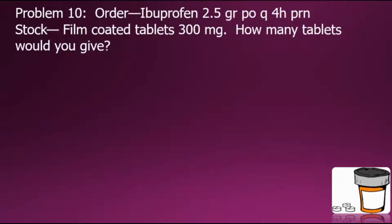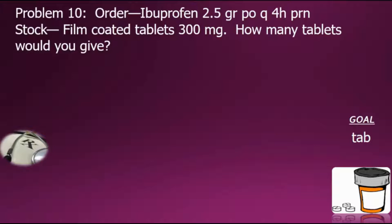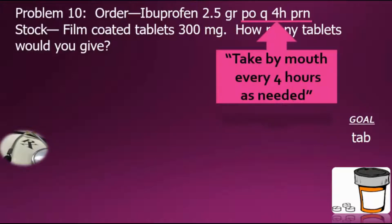In this problem we're given an order of ibuprofen 2.5 grains PO Q4 hours PRN. In stock is a film coated tablet with 300 milligrams of ibuprofen. How many tablets would you give? To answer this question we need to have the doctor's order in tablets, so we'll set tablets as our goal. PO means take by mouth, Q4 hours stands for every four hours, and PRN means as needed. Ibuprofen is a medication given to relieve pain and fever.